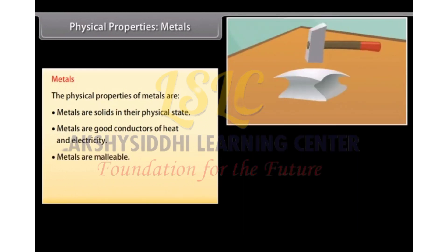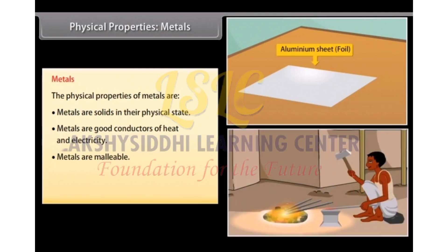Malleable: Metals can withstand hammering and be made into thin sheets known as foils. For example, iron is heated and then hammered into different forms, foils, shapes, etc.